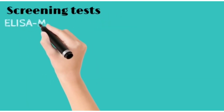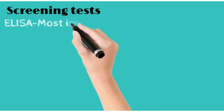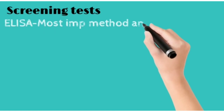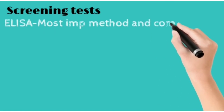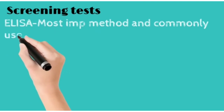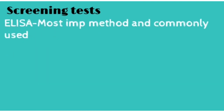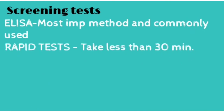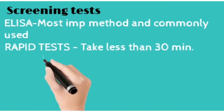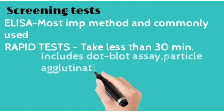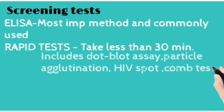Among screening tests, ELISA is the most important method. Rapid tests take less than 30 minutes and include dot blot assay, particle agglutination, HIV spot, and comb tests.